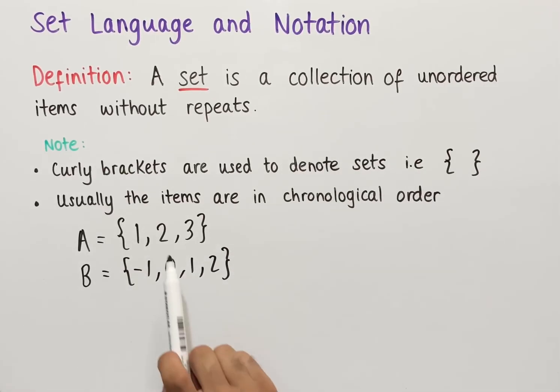Notice how in the first set we've got three items: 1, 2, and 3. In the second set we've got four items: -1, 0, 1, and 2. So the number of items within a set isn't limited.